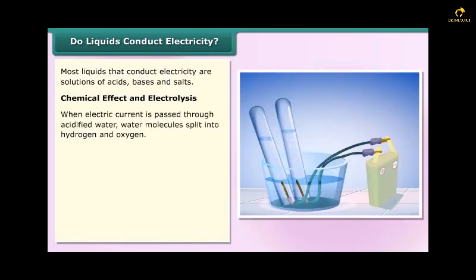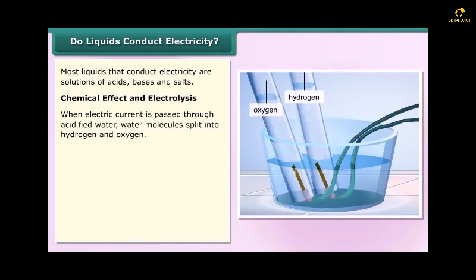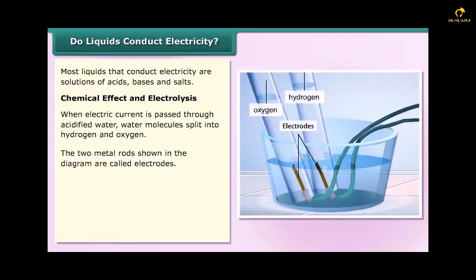Chemical effect and electrolysis: When electric current is passed through acidified water, water molecules split into hydrogen and oxygen. The two metal rods shown in the diagram are called electrodes.